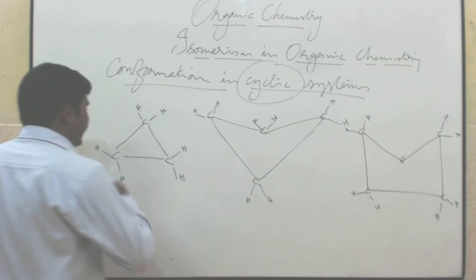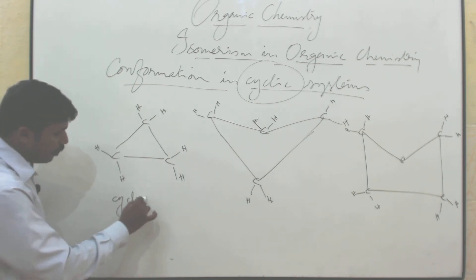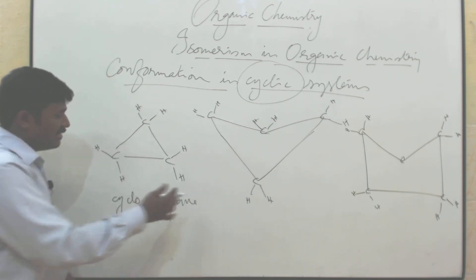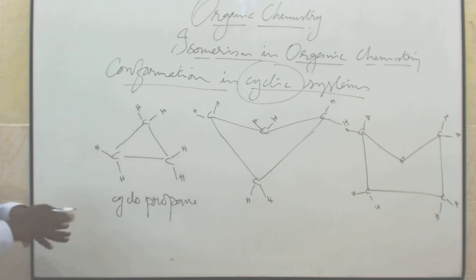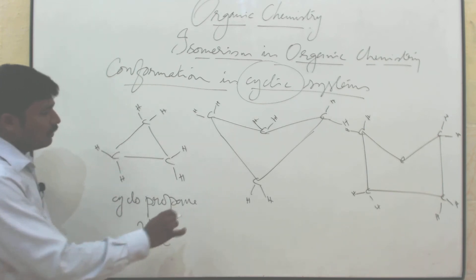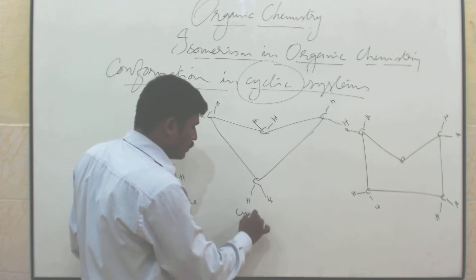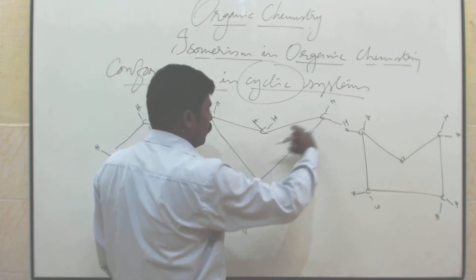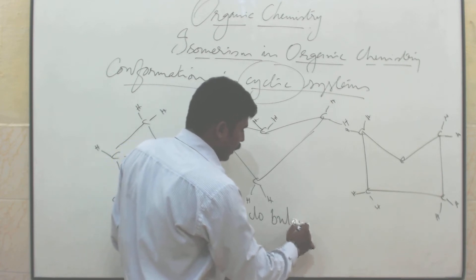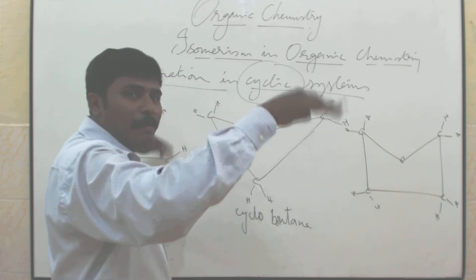The cyclopropane is named as cyclopropane and its structure will be a flat structure. And how will cyclobutane — cyclo 1, 2, 3, 4 — exist? Cyclobutane exists like a butterfly shape.